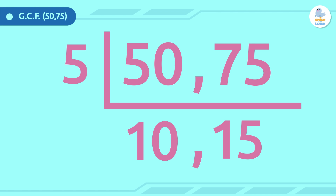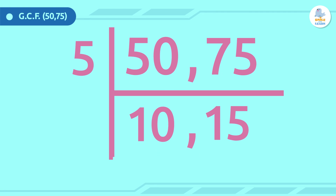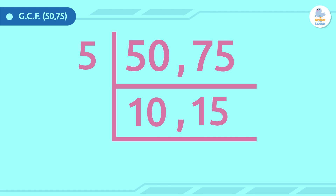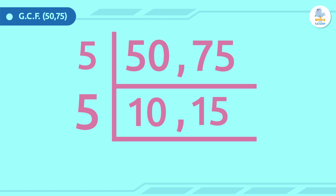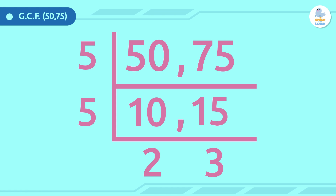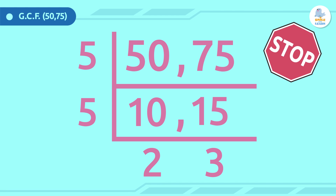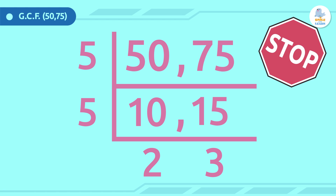We can simplify 10 and 15 more, so we continue. The smallest prime number that goes into 10 and 15 is 5. We write 5 again to the left and divide again. 10 divided by 5 is 2, and 15 divided by 5 is 3. Now, 2 and 3 are prime numbers and we cannot simplify them anymore, so we stop here. It is important to remember that if we can't simplify one result anymore, we can stop even if the other one isn't prime.